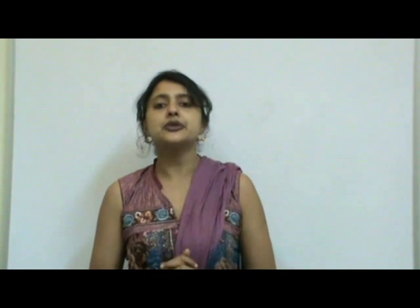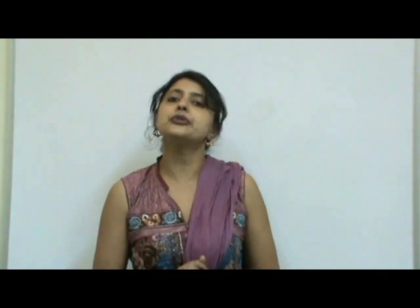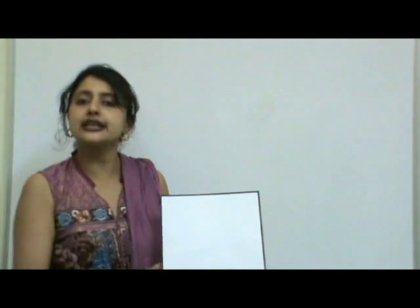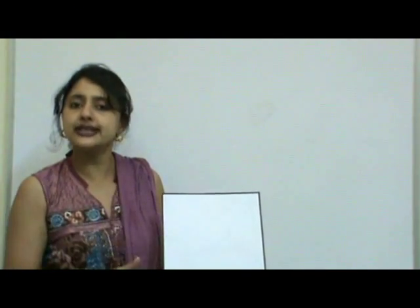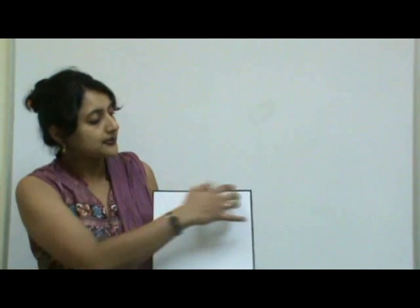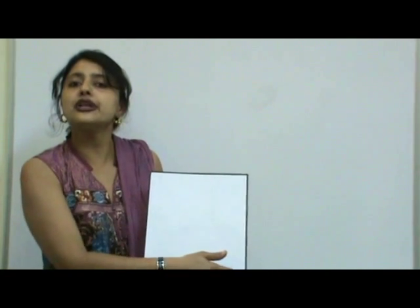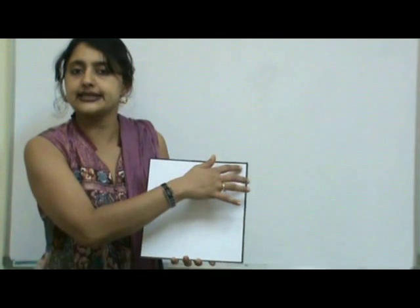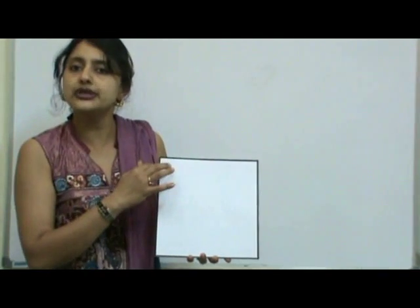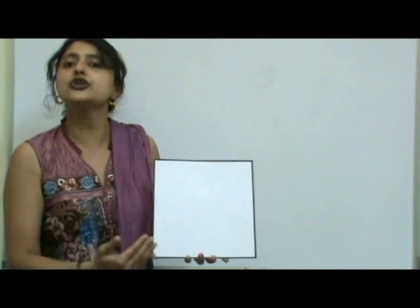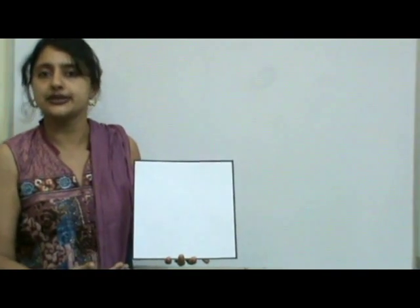First, we are going to study the features of a square. It has four sides, all four sides are equal, and it has four corners — or vertices. It has four vertices, and opposite sides are parallel to each other.